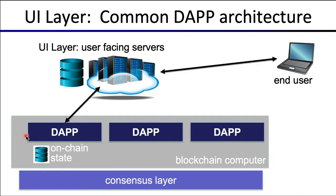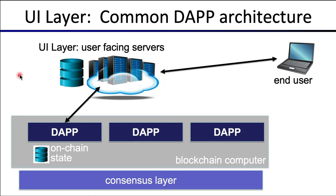Finally, the fourth layer is the layer that interacts with end users. We have the consensus layer at the bottom, and the blockchain computer on which the programs are executing. This blockchain computer is typically what's called a virtual machine emulator, running a virtual machine. The dApps themselves are programs that run on top of the virtual machine. The public — our end user — interacts with various cloud servers that themselves interact with these programs running on chain.